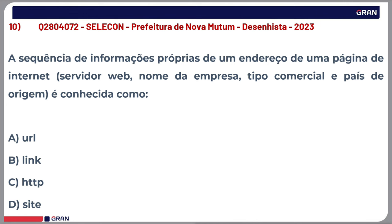Última questão do quiz: a sequência de informações de um endereço de página de internet — servidor web, nome da empresa, tipo comercial e país de origem — é conhecida como: A) URL, B) link, C) HTTP, D) site.